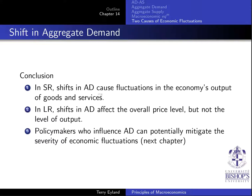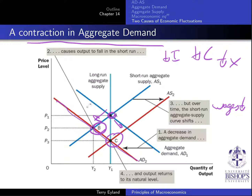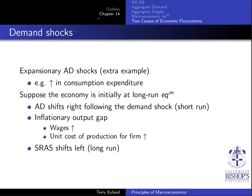A shift in aggregate demand causes fluctuations in the economy's output of goods and services. In the long run, that shift will affect the overall price level but not the overall level of output. Policymakers who influence aggregate demand can potentially mitigate economic fluctuations by driving aggregate demand back up. For an expansionary shock — such as an increase in consumption — the AD shifts right, creating an inflationary output gap. Over time, wages rise, the SRAS curve shifts left, leading to a higher price level, and output returns to its natural level.